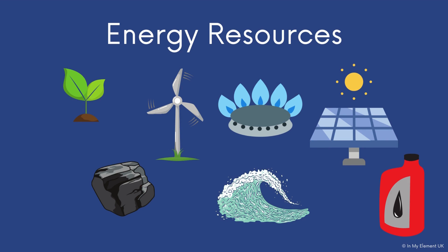Can you think about what the two categories are? The green plant represents biomass, the turbine represents wind, there's a lump of coal, water in the form of a wave, a hob showing natural gas, the sun and a panel showing solar, and crude oil.